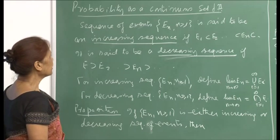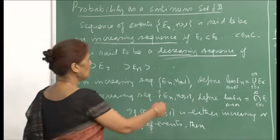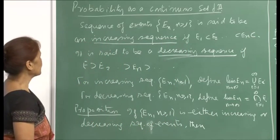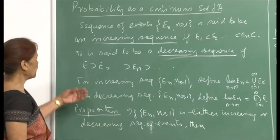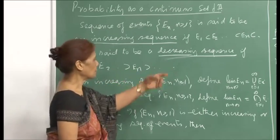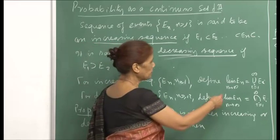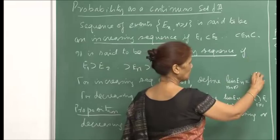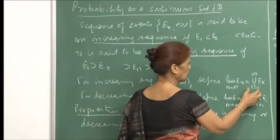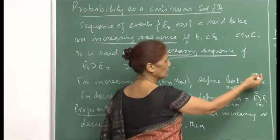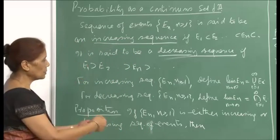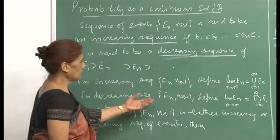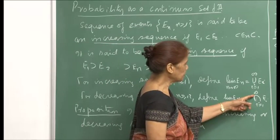A sequence of events {Eₙ, n ≥ 1} is an increasing sequence if E₁ ⊆ E₂ ⊆ ··· ⊆ Eₙ ⊆ ···. A decreasing sequence has E₁ ⊇ E₂ ⊇ ··· ⊇ Eₙ ⊇ ···. For an increasing sequence, we define lim Eₙ as ∪ᵢ₌₁^∞ Eᵢ. For a decreasing sequence, lim Eₙ is defined as ∩ᵢ₌₁^∞ Eᵢ.